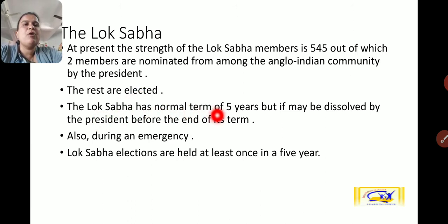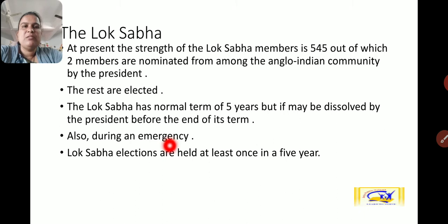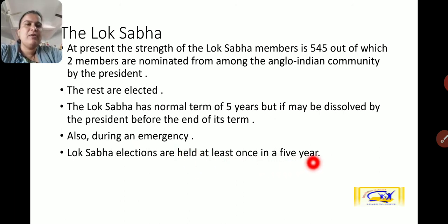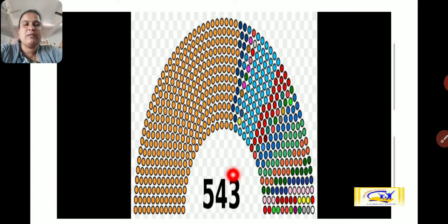The Lok Sabha has a normal term of five years, but it may be dissolved by the President before the end of its term. During an emergency, Lok Sabha can also be dissolved. Lok Sabha elections are held at least once every five years. 543 members are elected in the lower house — Lok Sabha — and two Anglo-Indian members are nominated by the President.